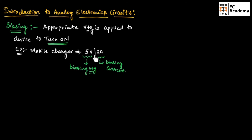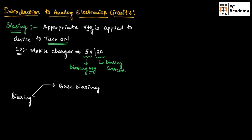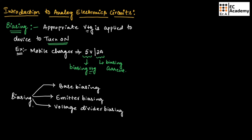If you consider biasing, there are four types: the first is base biasing, the second is emitter biasing, the third is voltage divider biasing, and the fourth is feedback biasing. In the syllabus, we will be discussing voltage divider biasing and feedback biasing.